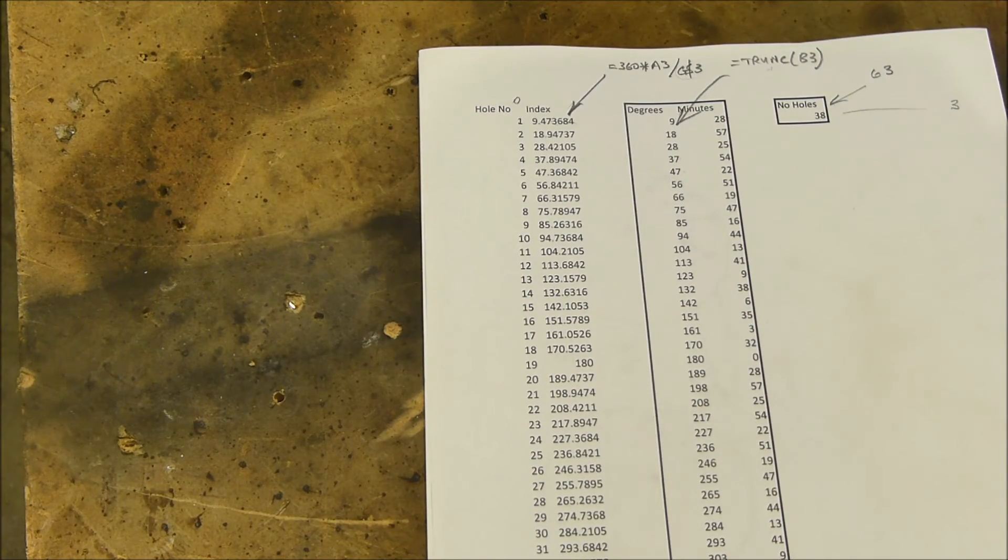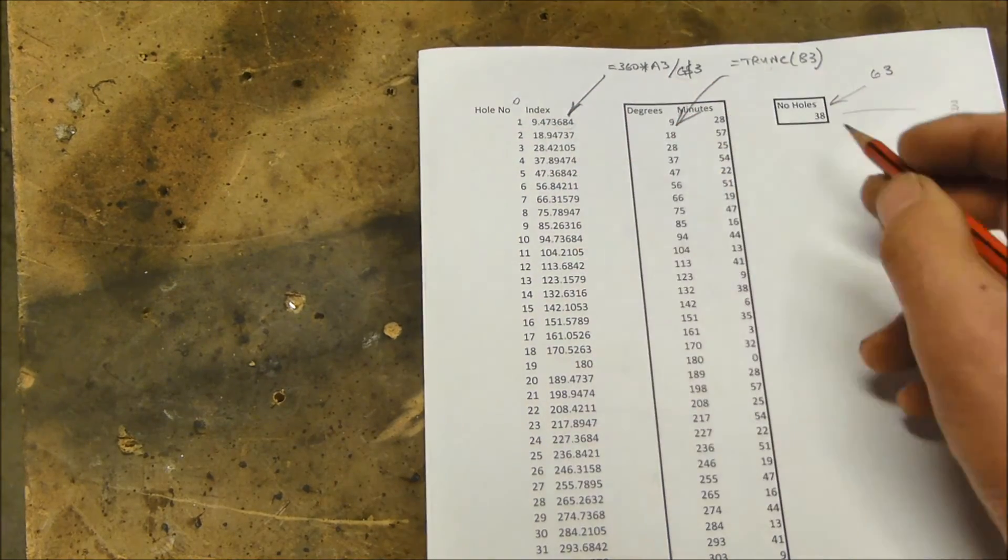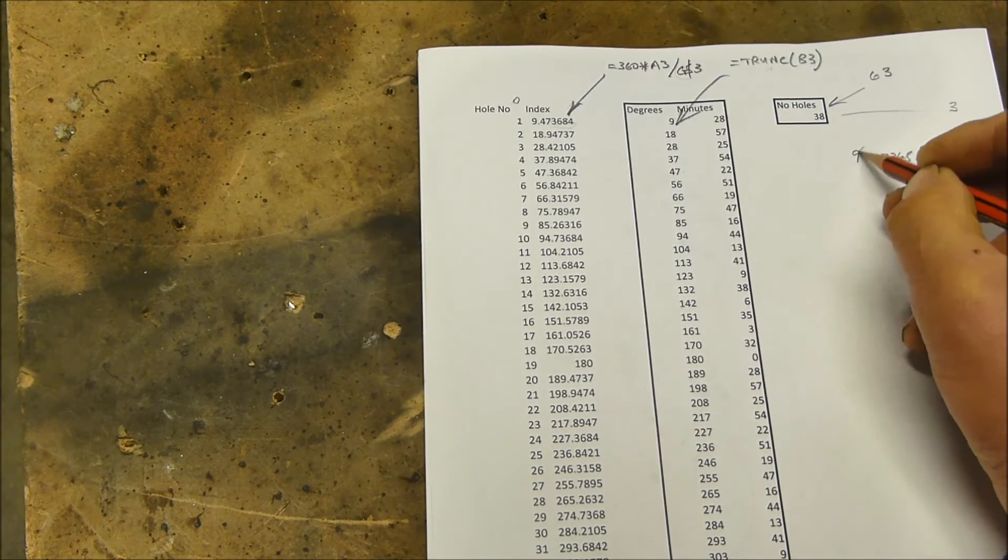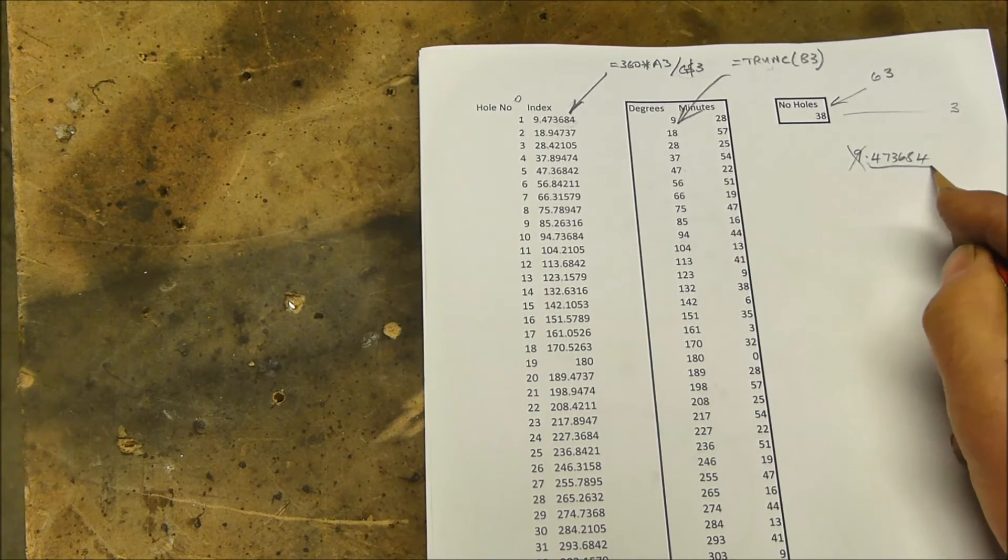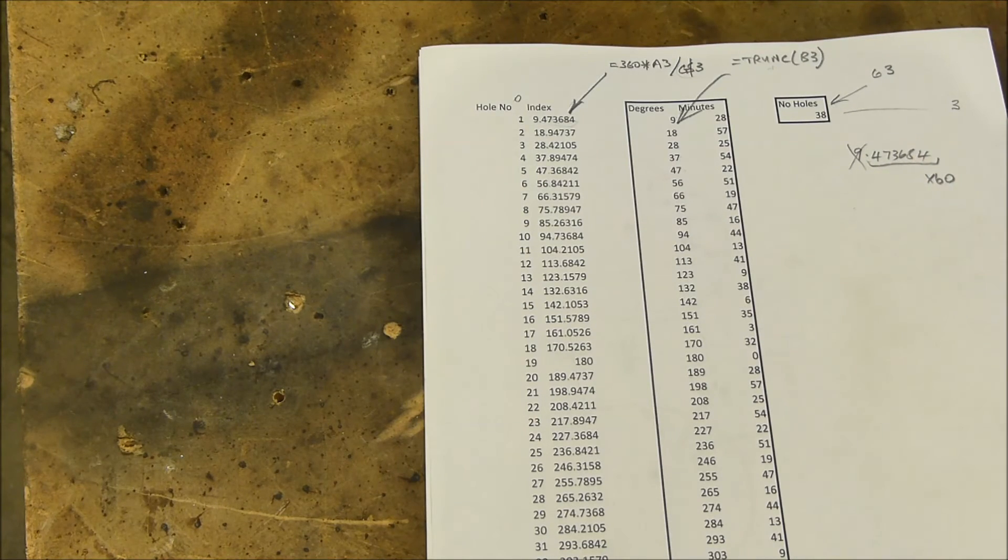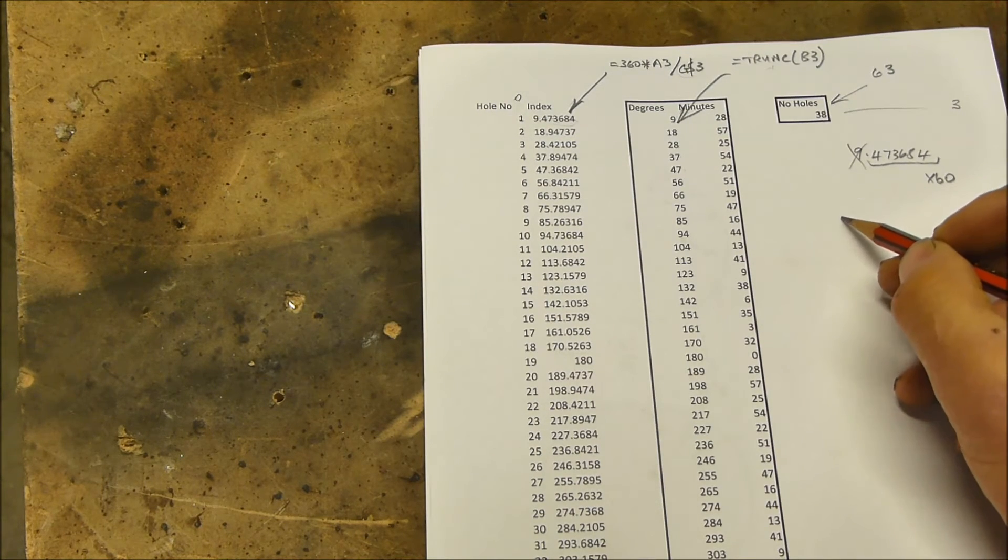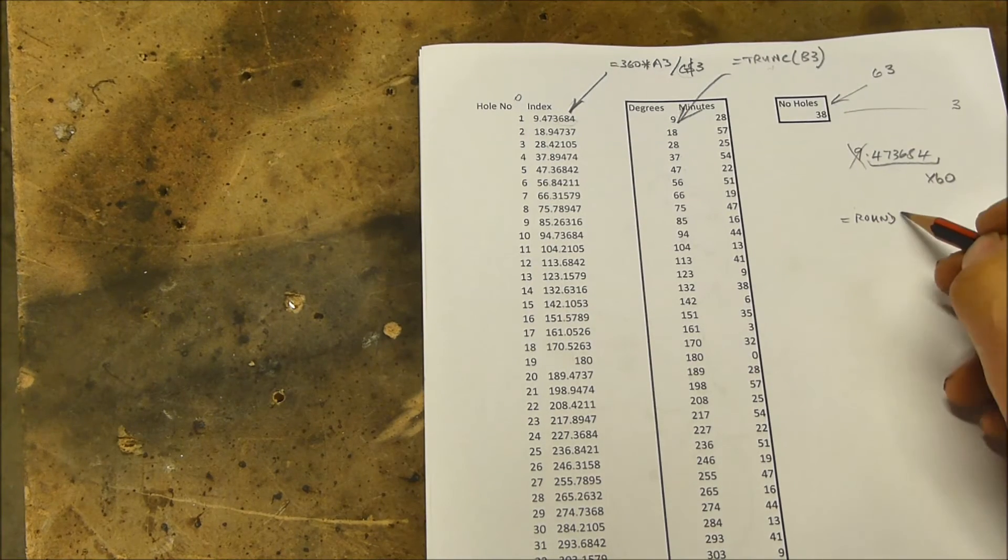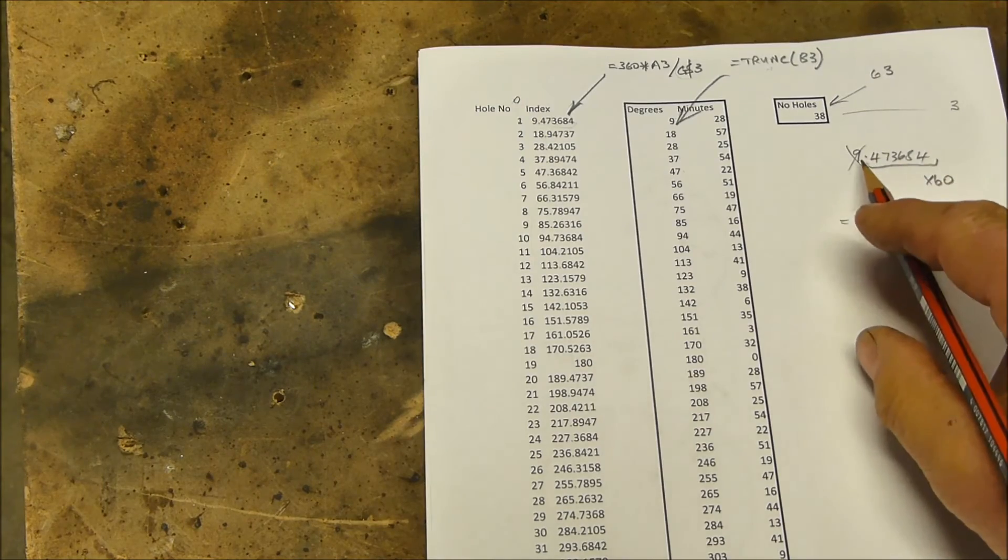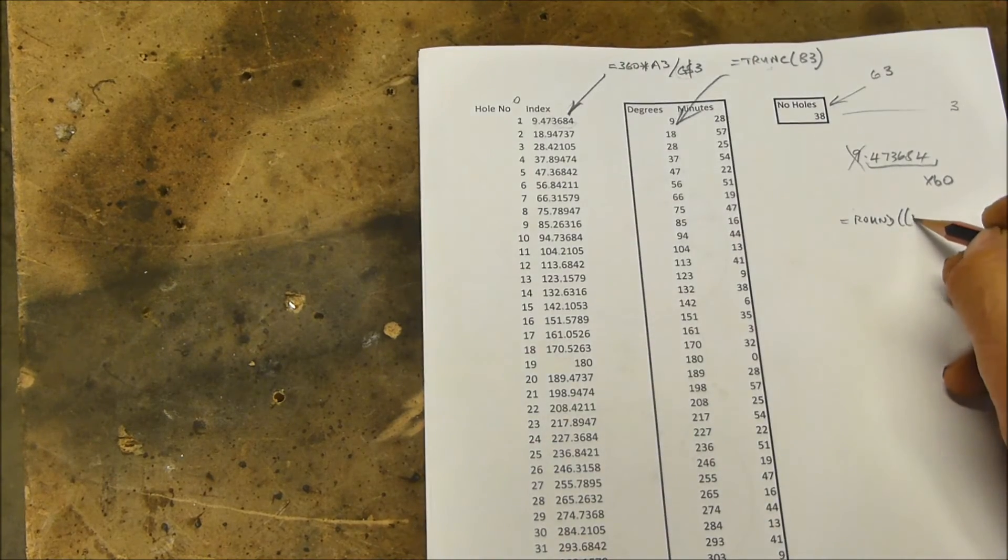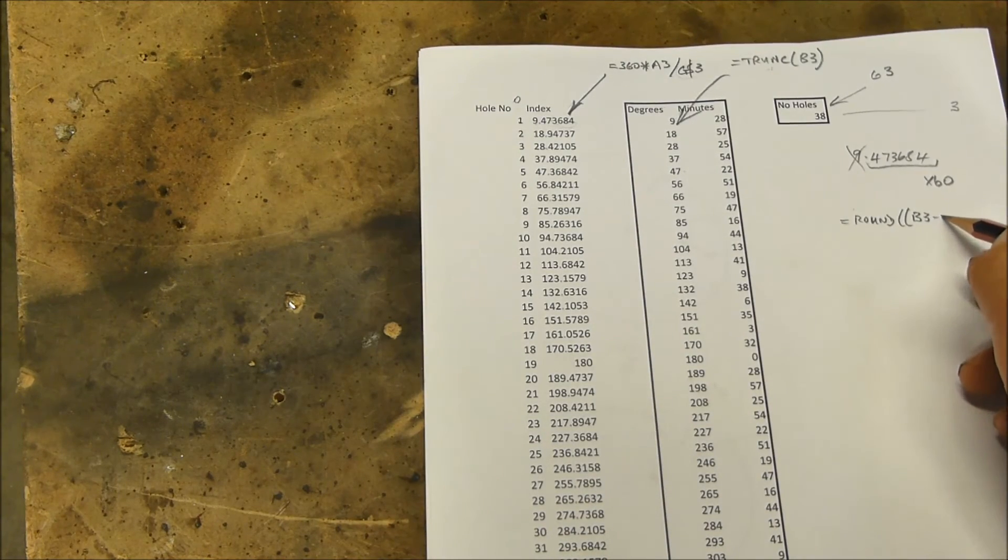We now want the value of this bit in seconds. So we want to turn 9.473684, so we've got rid of that. We want to turn this bit here into minutes. So if we multiply it by 60, that'll give us a number with a whole lot of decimal points, and we don't want the decimals, we want the number rounded. So Excel has a round function, and it's called round.